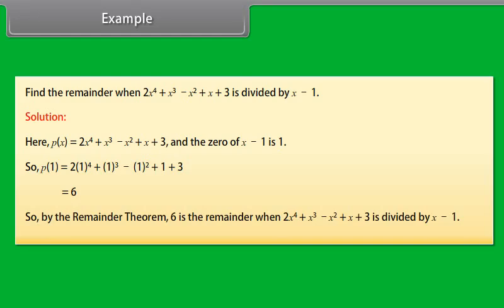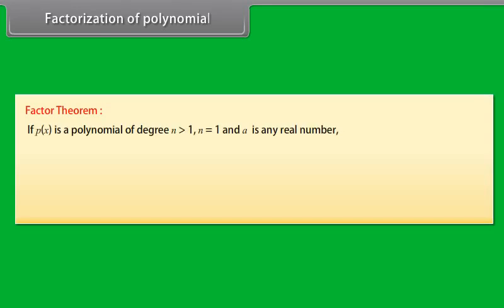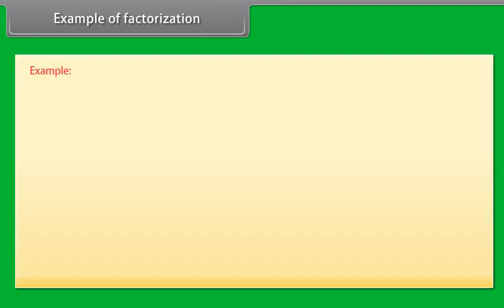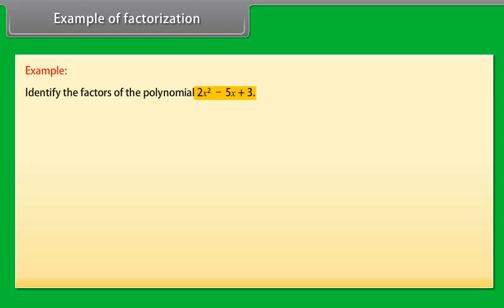Find the remainder when 2X⁴ + X³ − X² + X + 3 is divided by X − 1. Here P(X) = 2X⁴ + X³ − X² + X + 3, and the zero of X − 1 is 1. So P(1) = 2(1)⁴ + (1)³ − (1)² + 1 + 3 = 2 + 1 − 1 + 1 + 3 = 6. By the remainder theorem, 6 is the remainder.